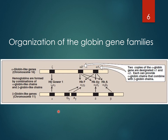Here is the organization of the globin gene families, which gives a better understanding of hemoglobinopathies. Chromosome number 16 carries alpha-globin-like genes, while autosomal chromosome number 11 carries beta-globin-like genes. Alpha-globin-like genes are three: alpha-1, alpha-2, and zeta. Either alpha-1 or alpha-2 can produce alpha chains, while zeta produces zeta chains. Genomically, there is another pair of chromosome 16, so altogether six alpha-globin-like genes are present.